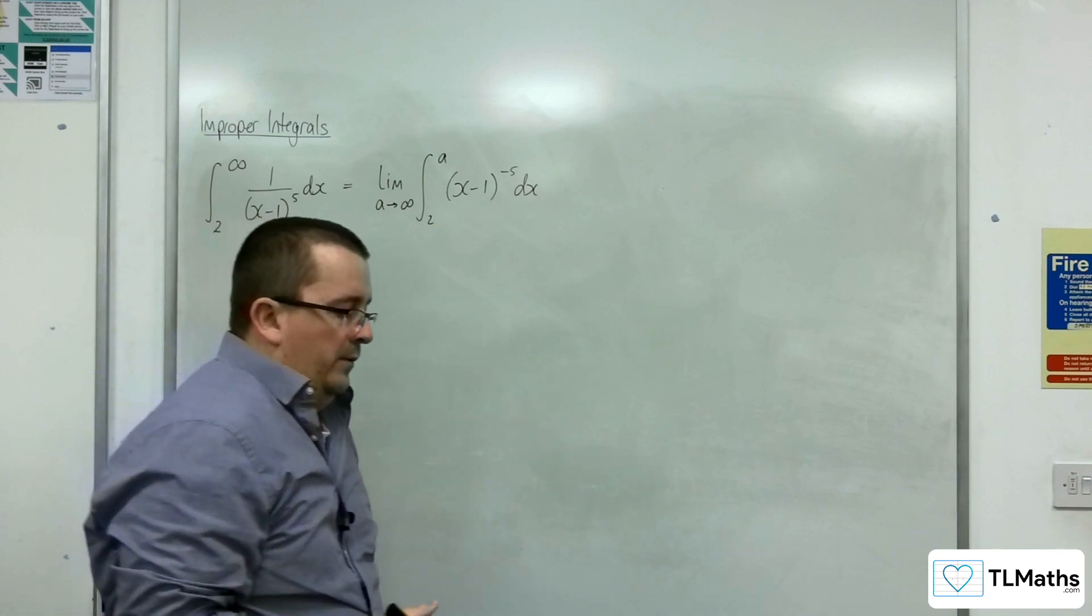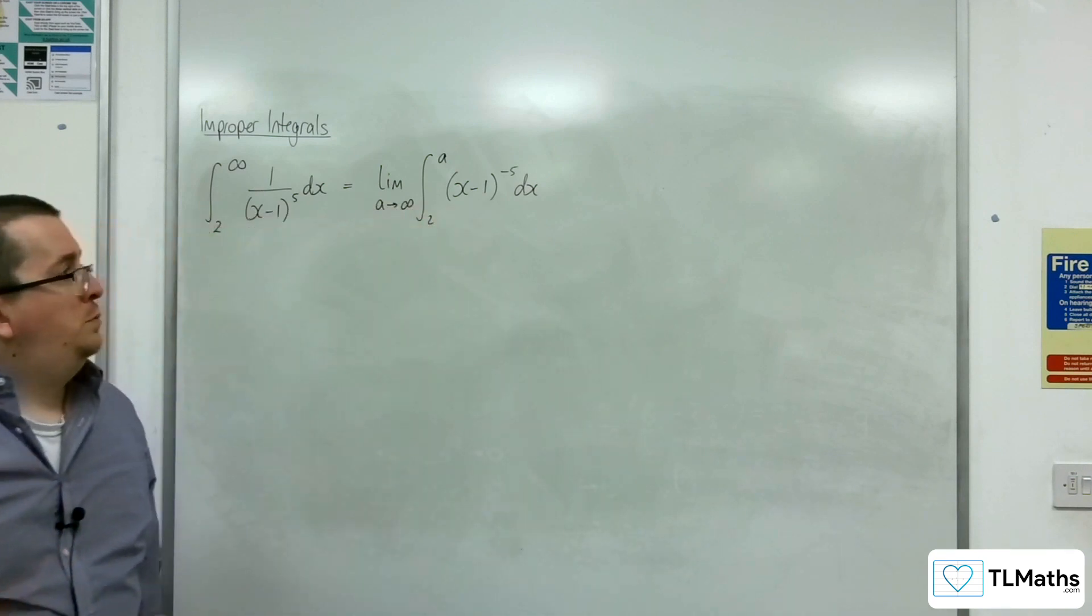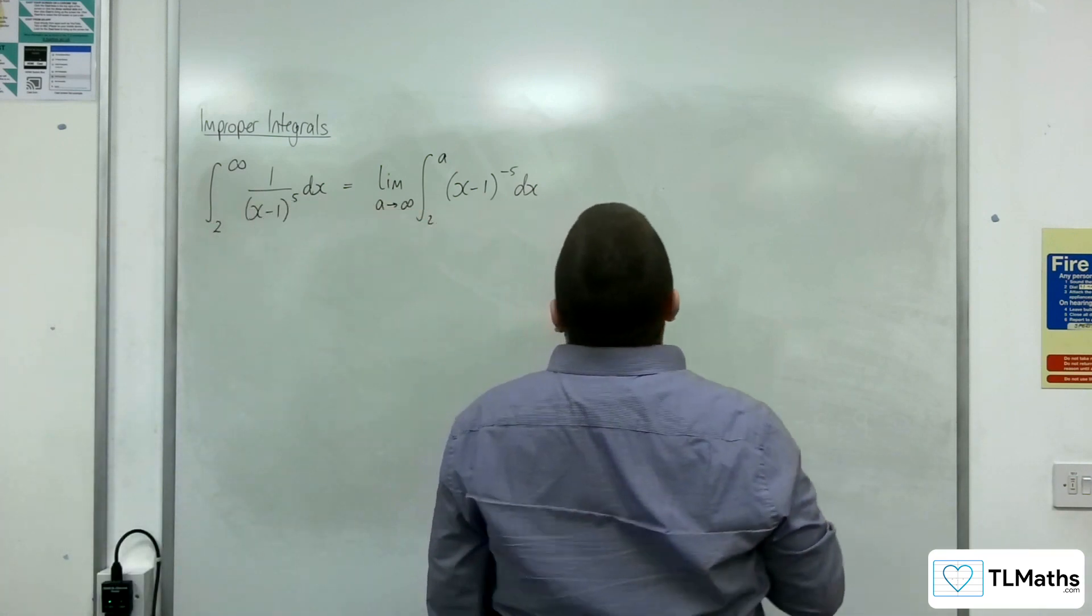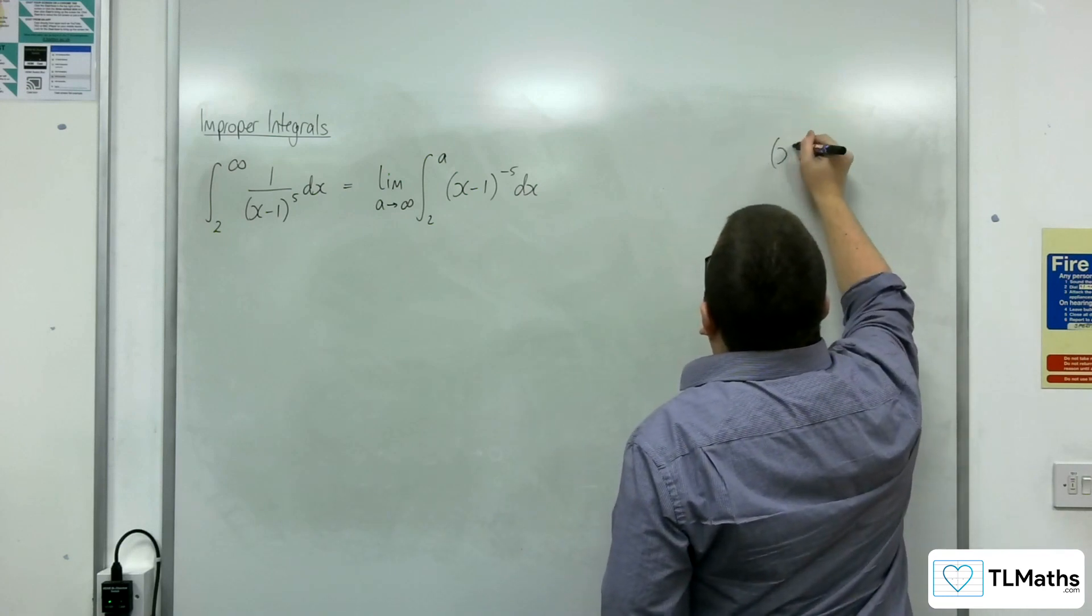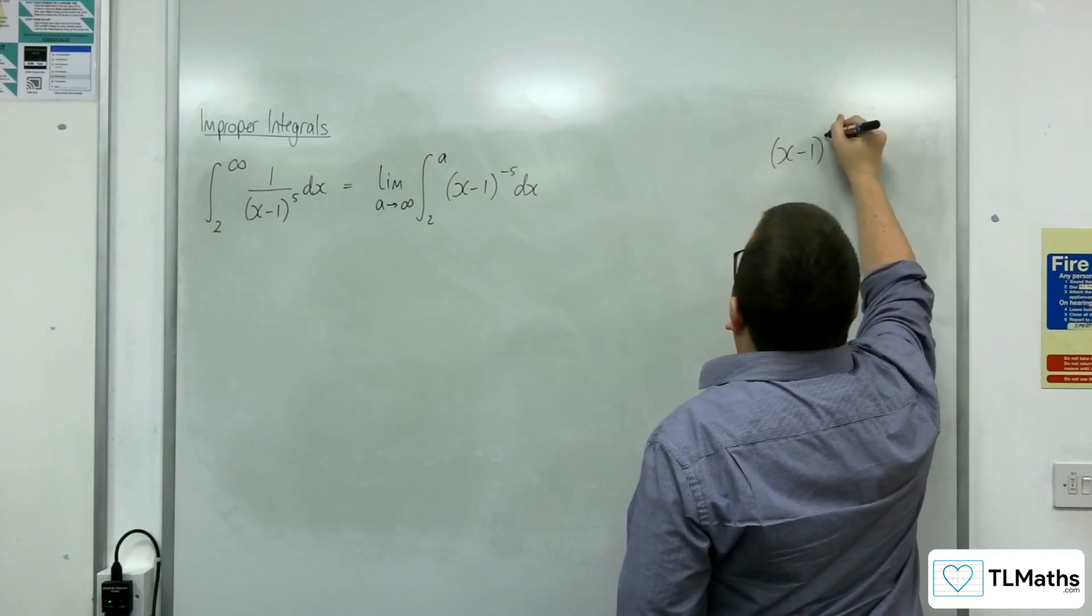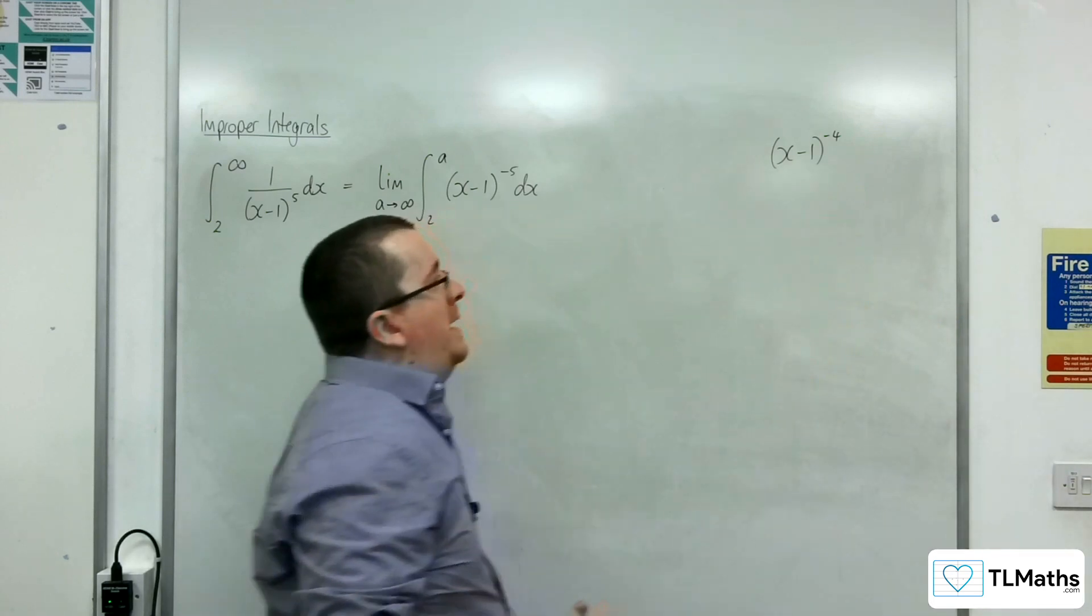Now the way that I reverse the chain rule is I think about, well, the integral will have (x minus 1) and it will be to the minus 4. So I would have added 1 to the power at some point.